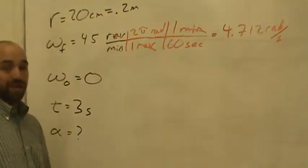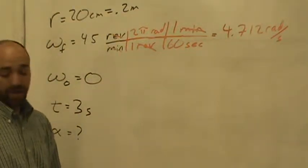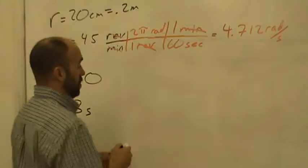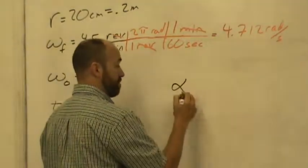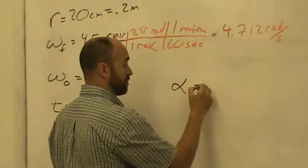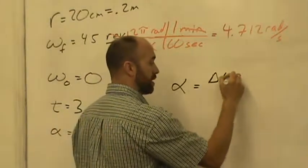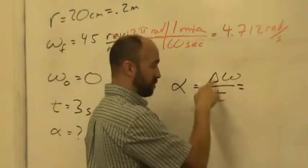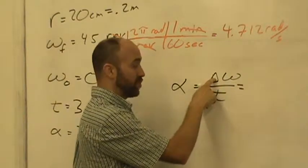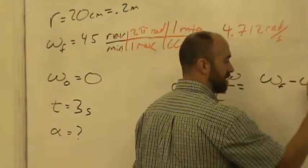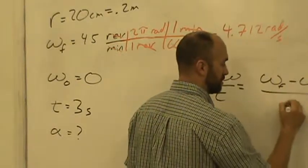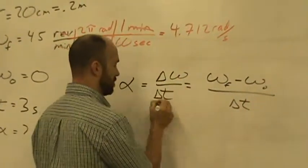So now we've got proper units. Now the question is, what is alpha? So we're just going to break out the definition of alpha. Alpha, angular acceleration, is equal to change in omega over time. Remember that change, that delta there, that triangle, means final minus initial.